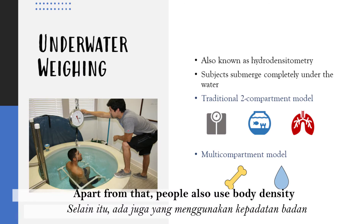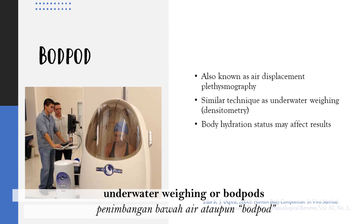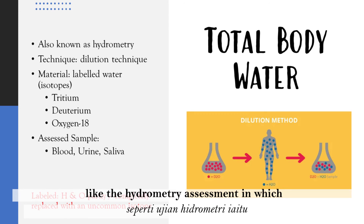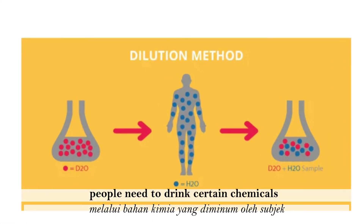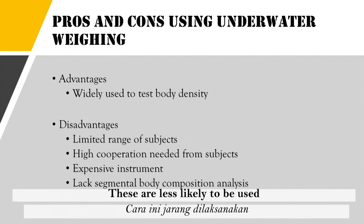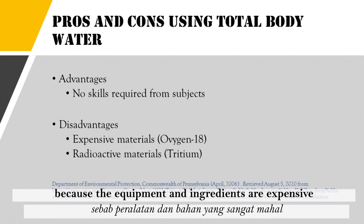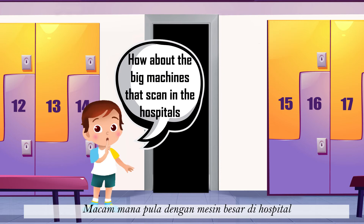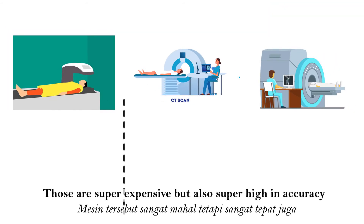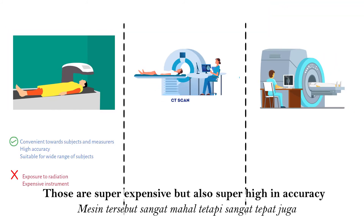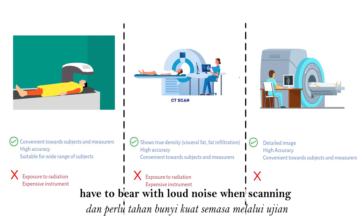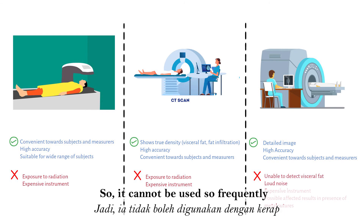Apart from that, people also use body density to estimate body composition through underwater weighing or bod pods. Some also use chemicals to estimate body composition, like the hydrometry assessment in which people need to drink certain chemicals and provide blood, urine, and saliva samples. These are less commonly used because the equipment and ingredients are expensive and not very accurate. As for big machines in hospitals like DEXA, CT scan and MRI, those are super expensive but also super high in accuracy, with disadvantages like exposure to radiation and loud noises during scanning.